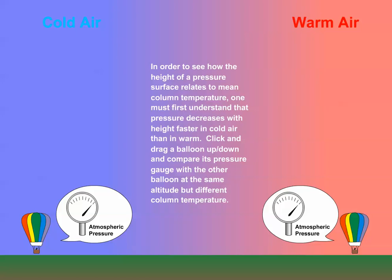To understand the relationship between the temperature of air columns and the height of constant pressure surfaces, let's take a virtual balloon ride. One balloon is located in a warm air column, while the other is in a cold air column, and at the surface their pressure gauges read the same value.